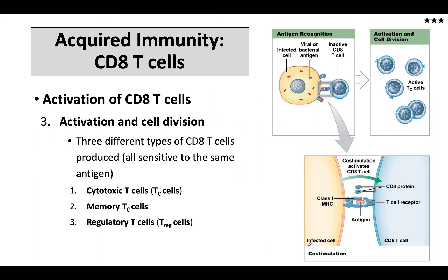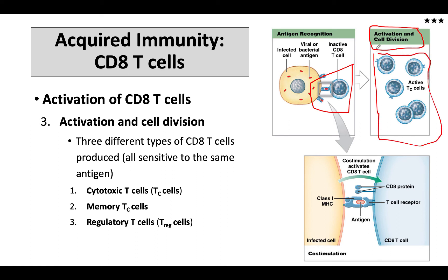Once we get that activation, we are going to get stimulation of two things. We're going to go through clonal expansion, as shown here. We might have had one, two, five, or maybe 20 cells that recognize that particular antigen. But once this process is activated, we get clonal expansion and end up with an army of T cells that recognize this specific antigen — only this antigen — primed and ready to attack.